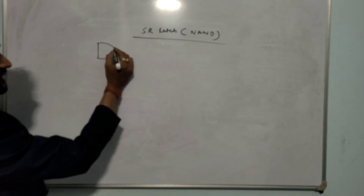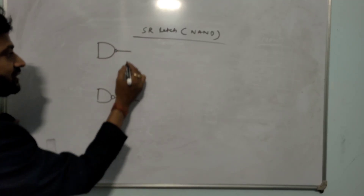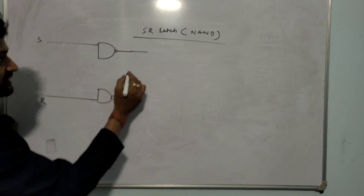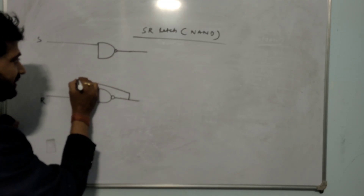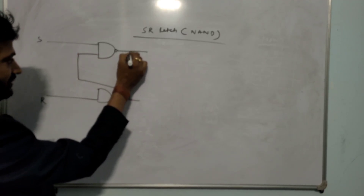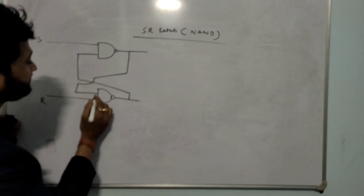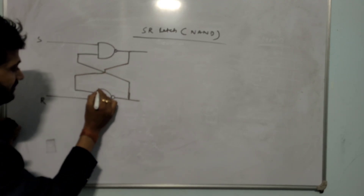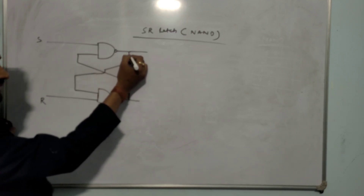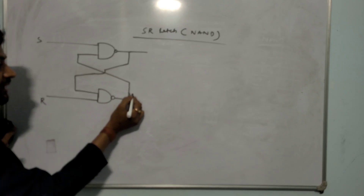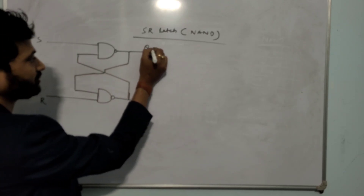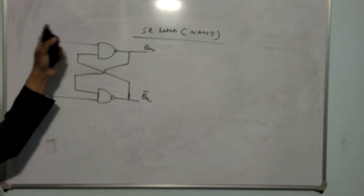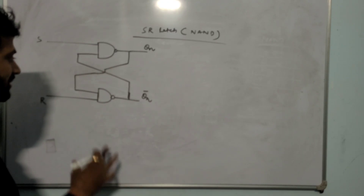Since we are using NAND gates to design the SR latch, we take two NAND gates. The inputs are S and R. The output of the first gate is fed to the input of the second NAND gate, and the output of the second NAND gate is fed back to the input of the first NAND gate. The output is Qn, and the other output is Qn-bar — if one is 0 the other is 1. That is the block diagram of SR latch using NAND gate.